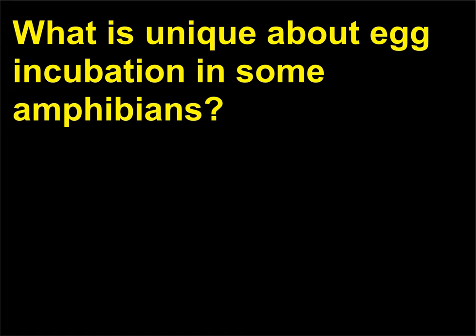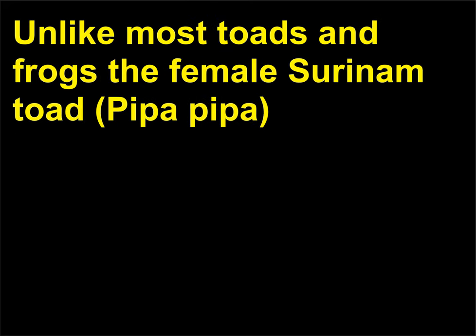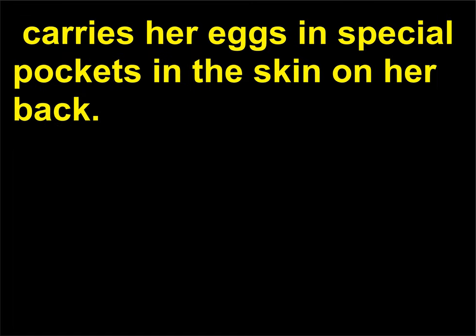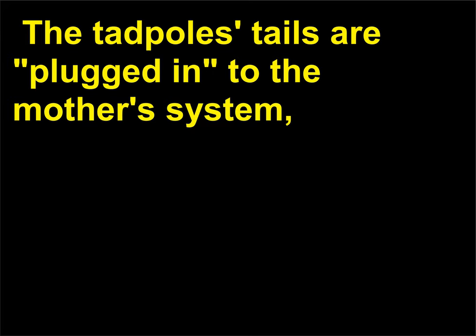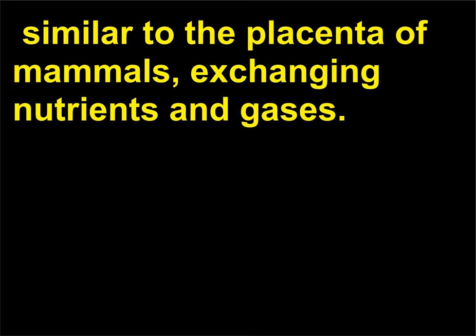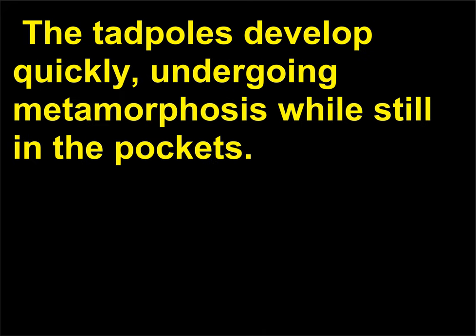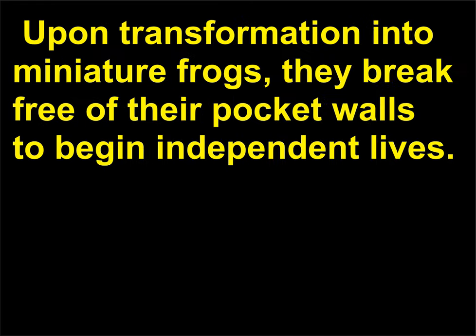What is unique about egg incubation in some amphibians? Unlike most toads and frogs, the female Suriname toad, Pipa pipa, carries her eggs in special pockets in the skin on her back. Each egg develops in its own pocket in the female's skin. The tadpoles' tails are plugged into the mother's system, similar to the placenta of mammals, exchanging nutrients and gases. The tadpoles develop quickly, undergoing metamorphosis while still in the pockets. Upon transformation into miniature frogs, they break free of their pocket walls to begin independent lives.